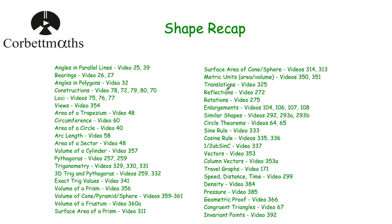Also know reflections in diagonal lines such as y = x and y = −x. Rotations: know how to rotate shapes on grids — remember you're entitled to tracing paper in the exam. Enlargements: know how to enlarge shapes, including with fractional and negative scale factors. A negative scale factor means it goes in the opposite direction. Similar shapes: if the scale factor for sides is n, then for areas it's n² and for volumes it's n³.